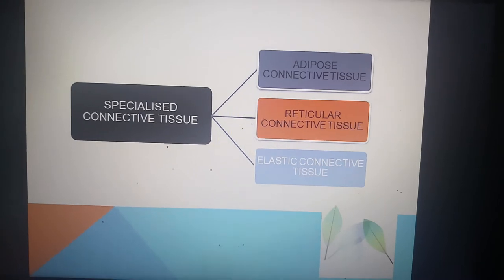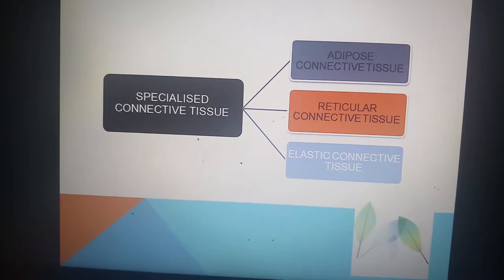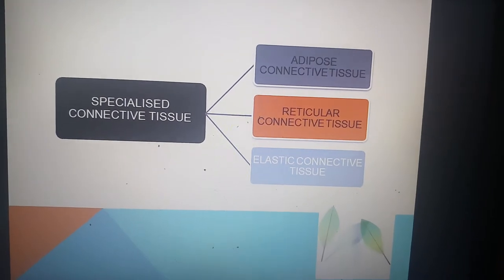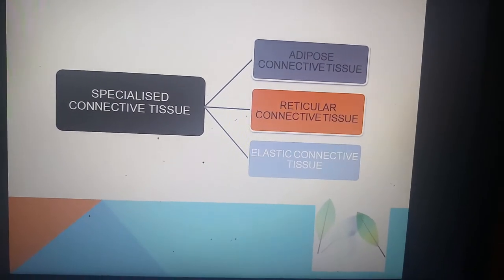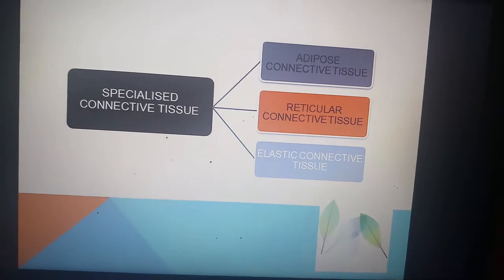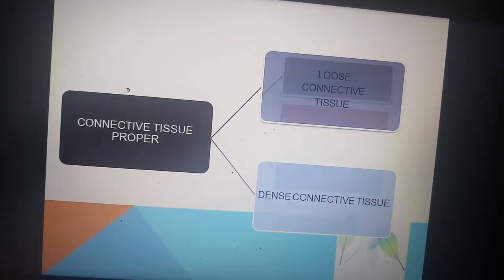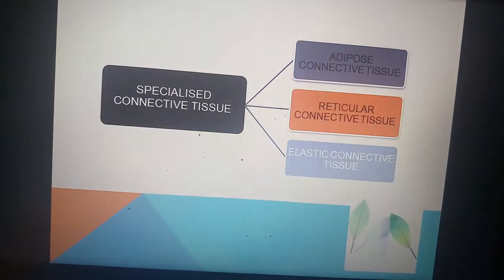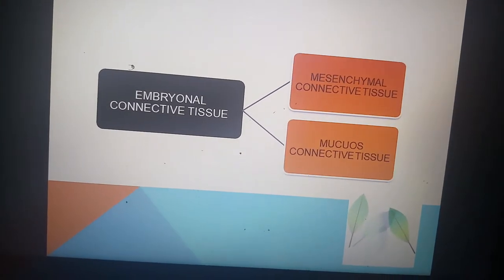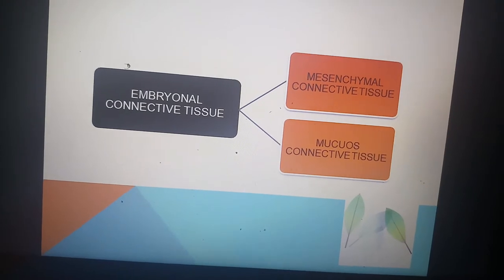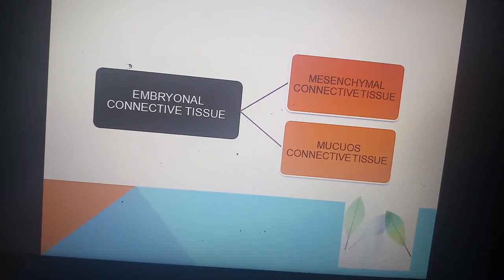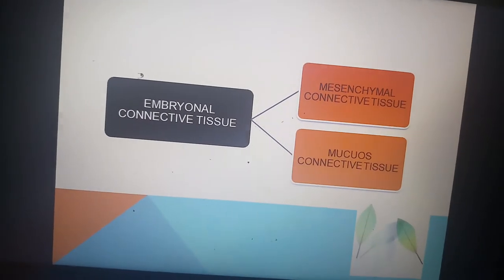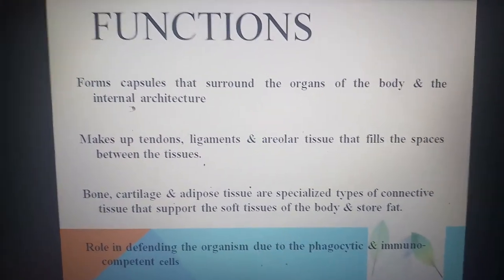Specialized connective tissue includes adipose connective tissue, reticular connective tissue, and elastic connective tissue. Embryonic connective tissue is divided into mesenchymal connective tissue and mucous connective tissue.